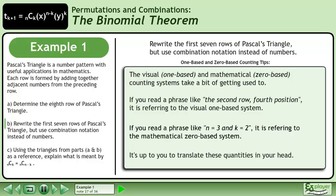It's up to you to translate these quantities in your head. The second row fourth position means n equals 1 and k equals 3. n equals 3 and k equals 2 means the fourth row, third position.